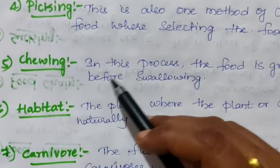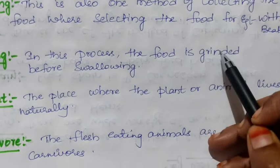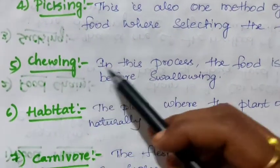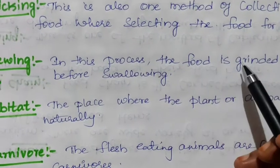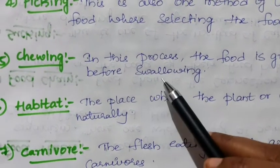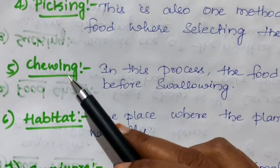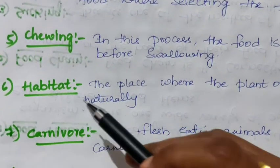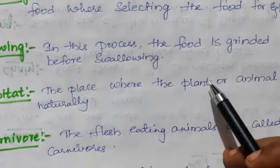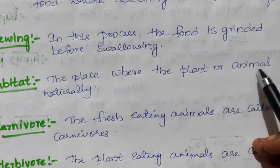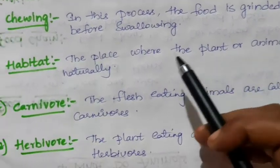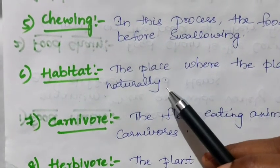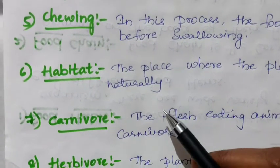Chewing: in this process, the food is ground before swallowing. When we eat food, we chew it well before swallowing — this is called chewing. Next keyword: habitat. Habitat is the place where a plant or animal lives naturally — the natural condition in which they are found.